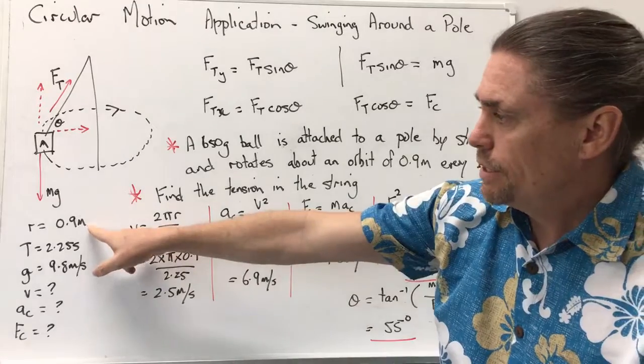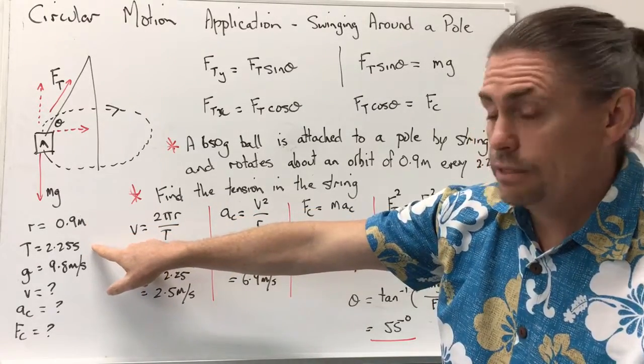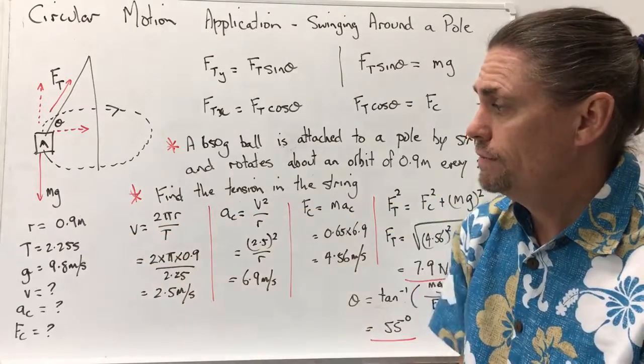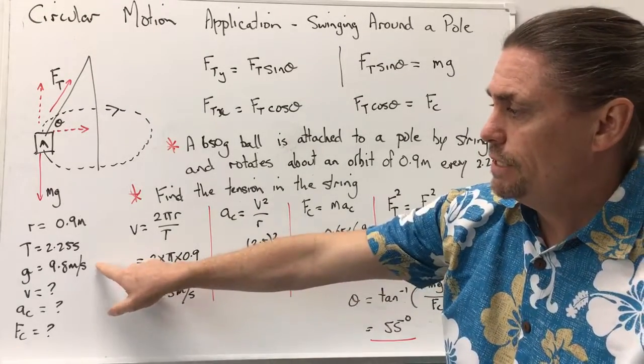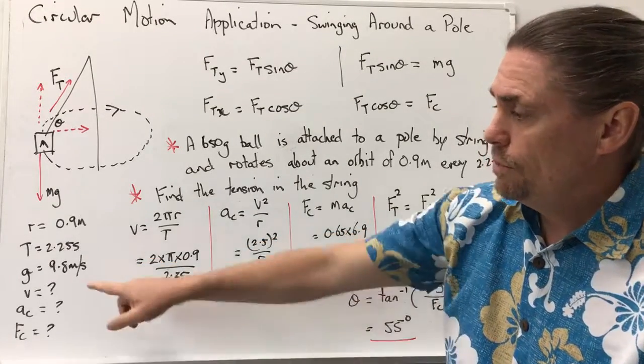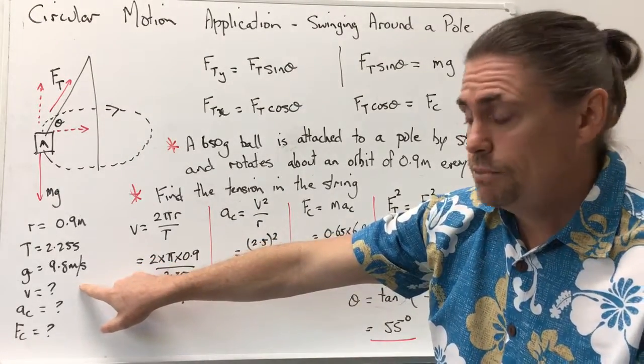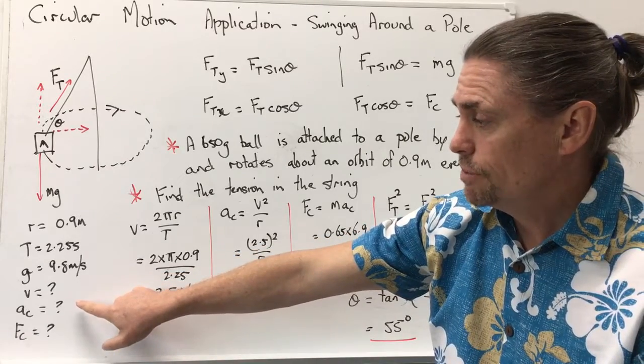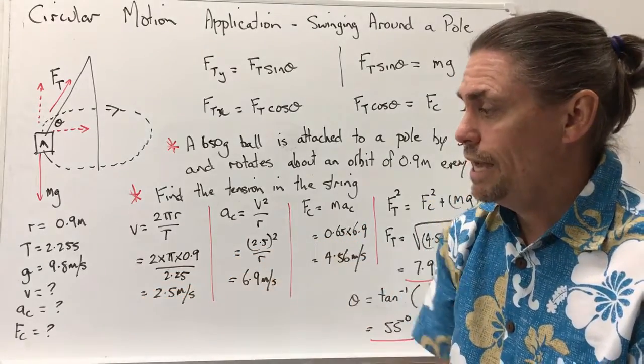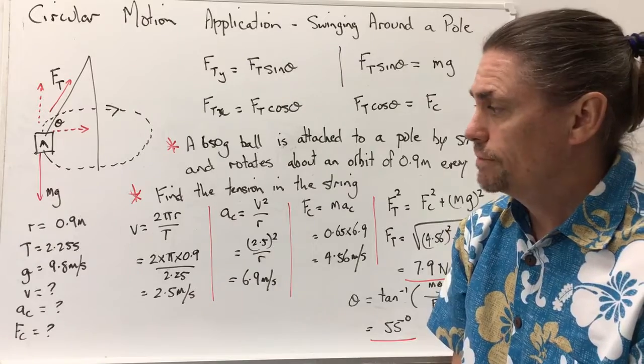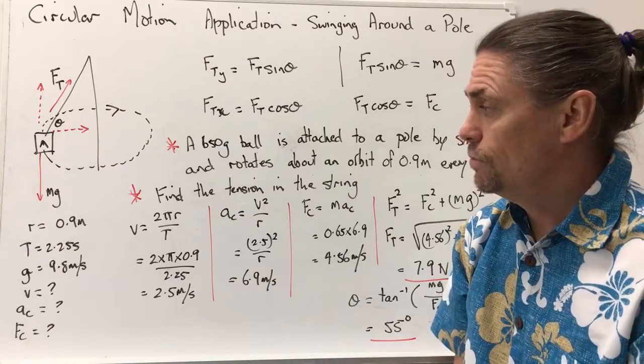So let's go through this logically. Our radius is 0.9 metres, our period capital T is 2.25 seconds, acceleration due to gravity is 9.8 metres per second squared. We don't have a velocity or speed of the object, we don't have a centripetal acceleration, nor do we have a centripetal force, and ultimately we don't have a tensional force either.